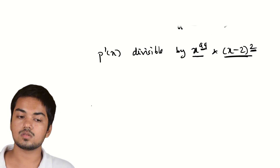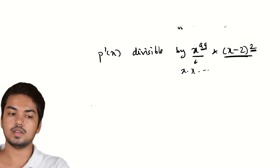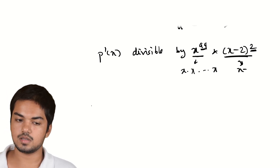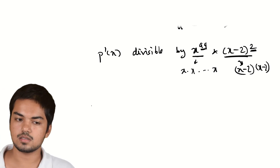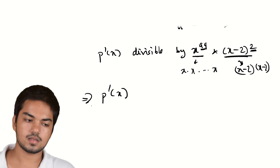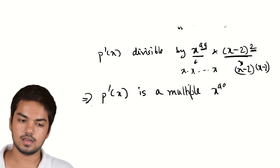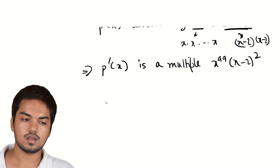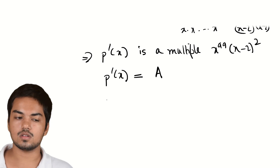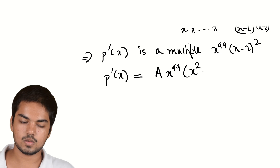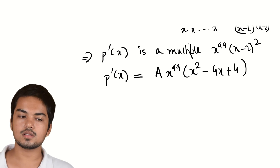Because x^99 and (x−2)^2 are coprime polynomials — x^99 factors into x repeated 99 times and (x−2)^2 factors as (x−2)^2, sharing no linear factors — p'(x) must be a multiple of their LCM, which is x^99·(x−2)^2. So we set p'(x) equal to a constant a times x^99·(x−2)^2 = a·x^99·(x^2 − 4x + 4). We only need a to be a constant; we'll see why.